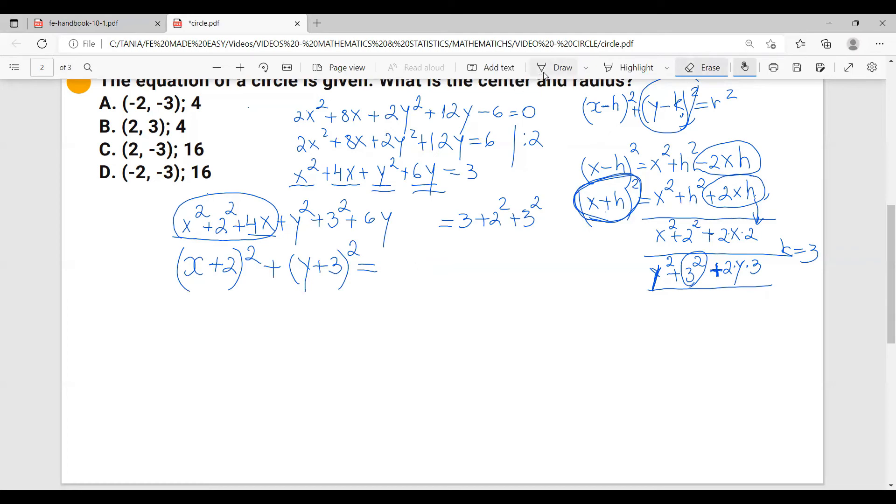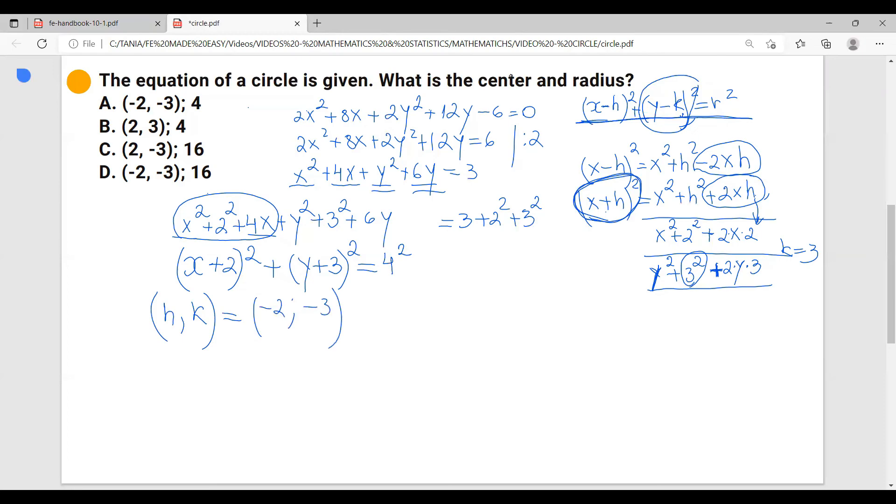So now if you pay attention to the original circle equation given in the FE handbook, we have (x - h)² + (y - k)² = r². In our case, our h and k, the center of the circle, is going to be (-2, -3), and then the radius of the circle is going to be 4. And the answer is A.